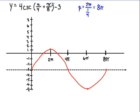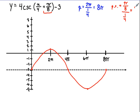From here, we also need to account for the phase shift. The pi over 8 tells us we're going to have a phase shift. Phase shift is h over b — here our h is pi over 8 and our b is 1/4. That equals 4π over 8, which simplifies to π over 2.